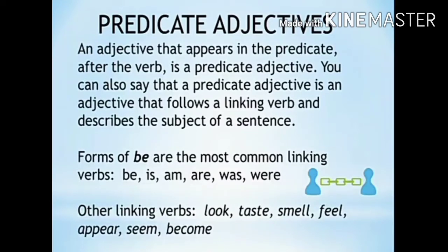Predicate adjective. Here you will learn one more thing — predicate adjectives. An adjective that appears in the predicate after the verb is a predicate adjective. You can also say that a predicate adjective is an adjective that follows a linking verb and describes the subject of a sentence. Forms of the predicate adjective: forms of 'be' are the most common linking verbs.